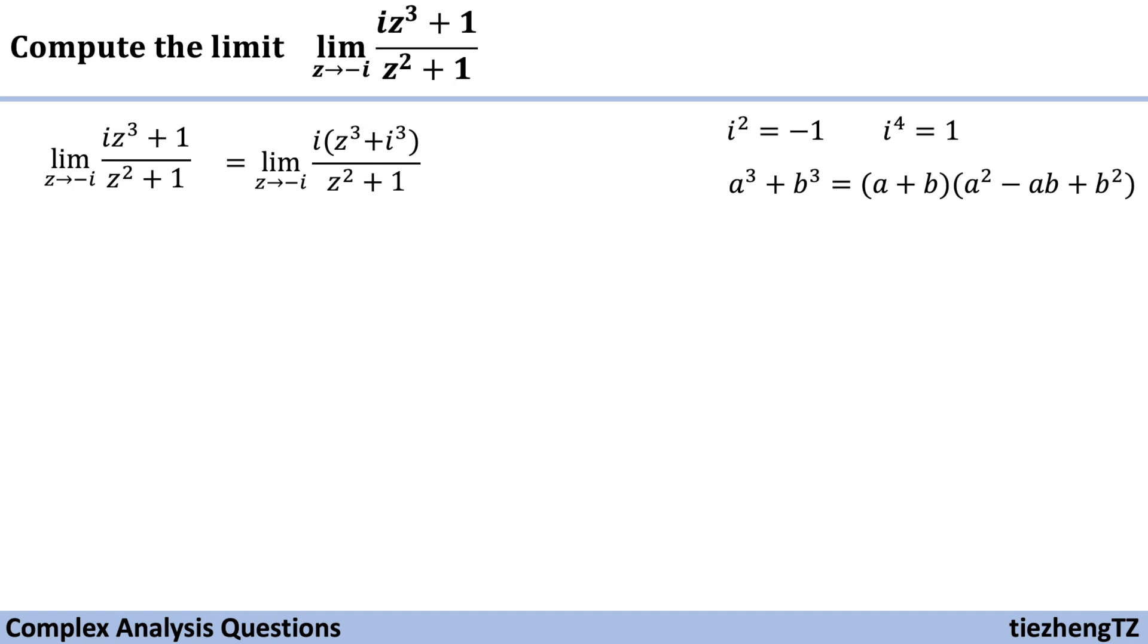And also we know this function a³ + b³ equals (a + b)(a² - ab + b²). So do one more step for the numerator part and the denominator part.